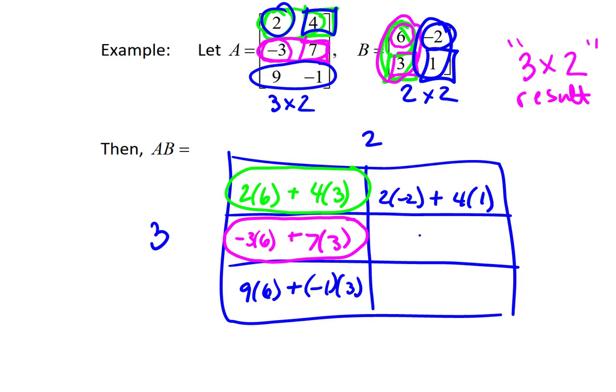Middle row of the right column: negative 3 times negative 2 plus 7 times 1. Bottom row of the first matrix times the right column: 9 times negative 2 plus negative 1 times positive 1. This can get messy quickly with large matrices — the point right now is simply to understand how the multiplication works. We need to understand the process because sometimes we'll have variables in a matrix, and a calculator won't multiply a number times a variable.